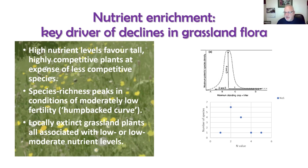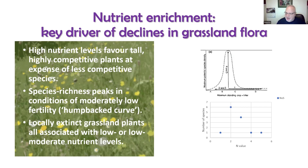These grasslands are dominated by what we'd technically call stress tolerators — slow-growing, uncompetitive plants that are very good at making use of limited soil resources. The opposite are very competitive plants like stinging nettles or hogweed that can grow very big and tall and out-compete others at higher nutrient levels. If you're trying to conserve species-rich grasslands — which have become a very rare habitat because of modern farming methods — you've got to think about how to maintain that species richness.